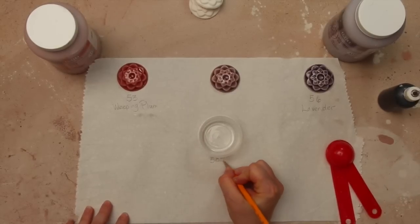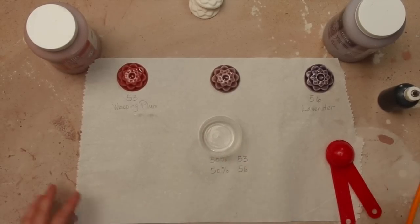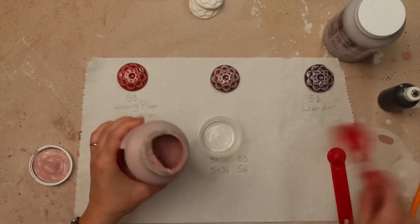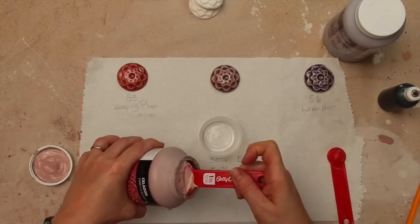To mix a small test batch, use measuring spoons and a small container, all available in the kitchen section of your local dollar store. Use a measuring spoon to measure out equal volumes of both glazes.